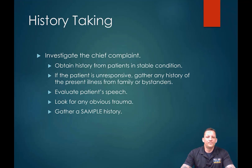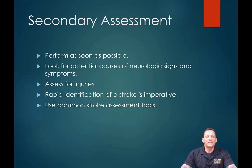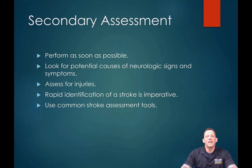Make sure you do your secondary assessment. If somebody is unstable, don't do it on scene — it can be done in the back of the rig. We're looking for subtle physical cues that tell us about neurologic signs and symptoms and injuries. Locally, we're heavily dependent on the Cincinnati Stroke Scale, and once we have a positive Cincinnati we go into the LAMS score. I encourage you to look that up in your local protocol.